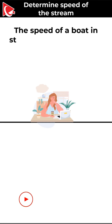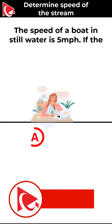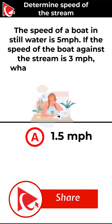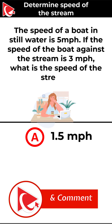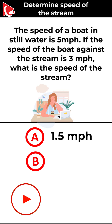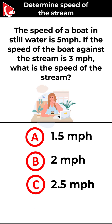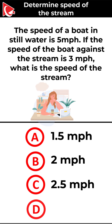You are presented with four different choices. Choice A: 1.5 miles per hour. Choice B: 2 miles per hour. Choice C: 2.5 miles per hour. And choice D: 3 miles per hour.